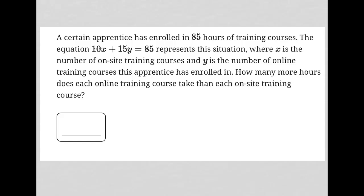This question says a certain apprentice has enrolled in 85 hours of training courses. The equation 10x plus 15y equals 85 represents this situation. I see the connection here between the 85 in the equation and the 85 in the total number of hours enrolled in the training course.